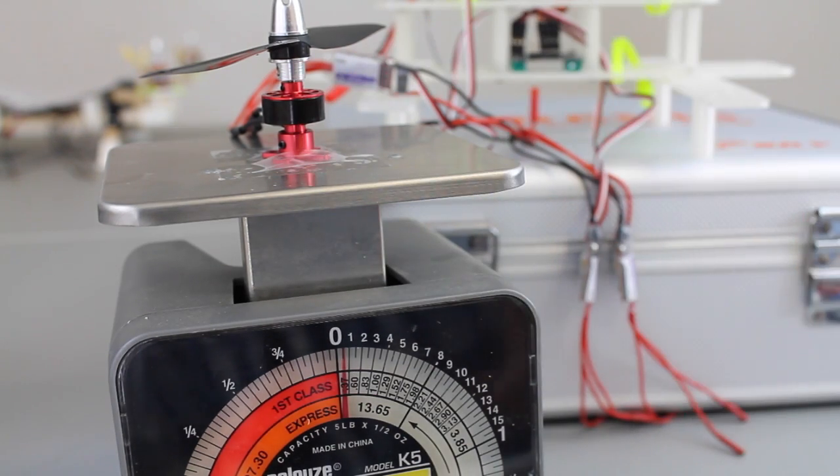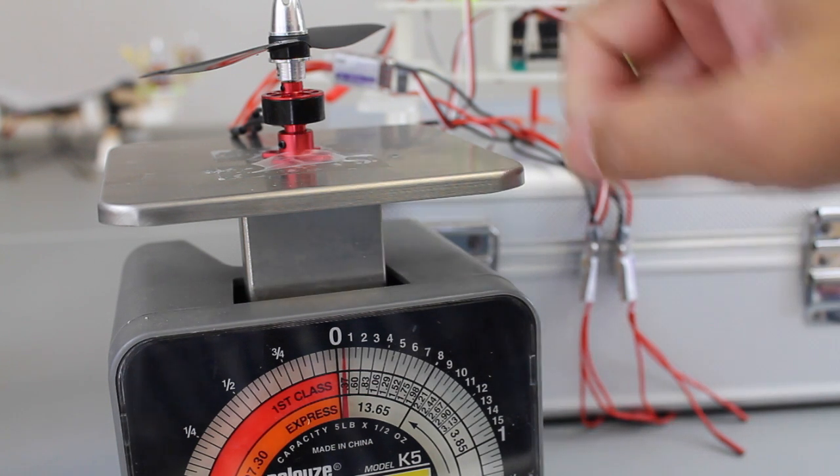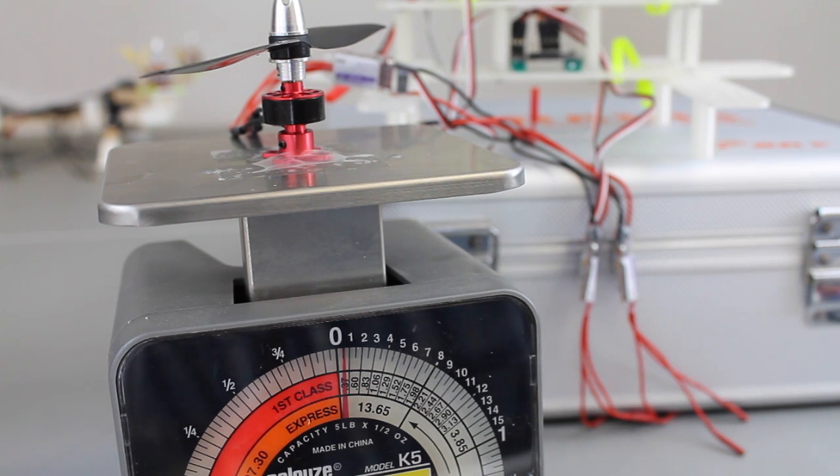So at 0.75 ounces that's roughly 20 grams. Now Hobby King states the weight of that motor is 10 grams. Now we incorporate the bullet connector and prop and I could see how that could get to about 20 grams. So once again nothing too scientific. Let's see what happens when we throttle this guy up.